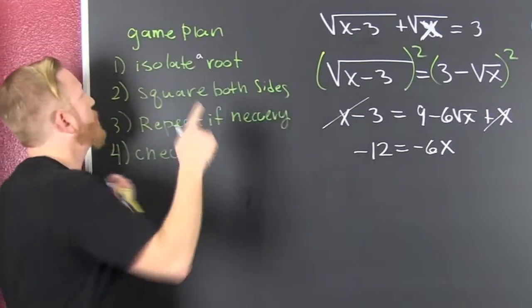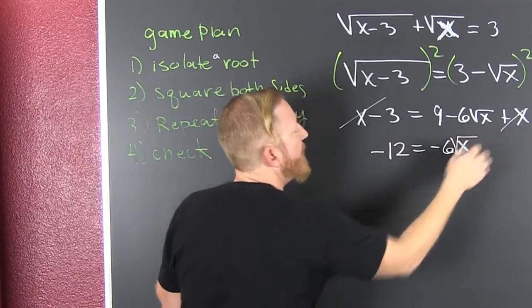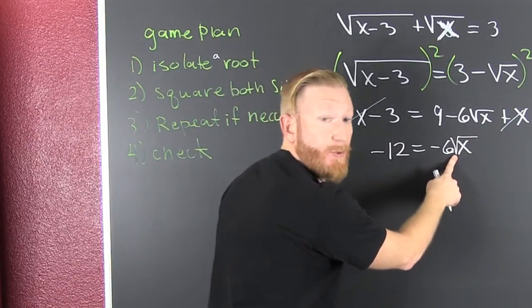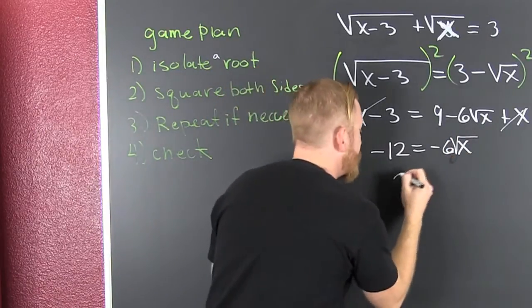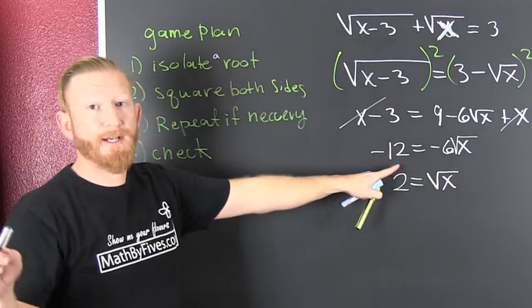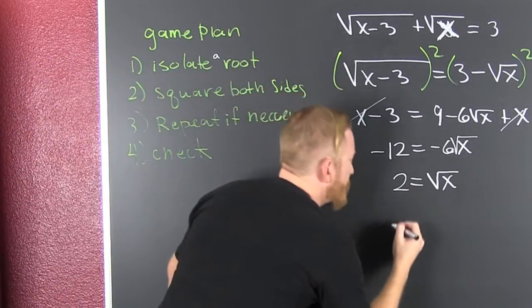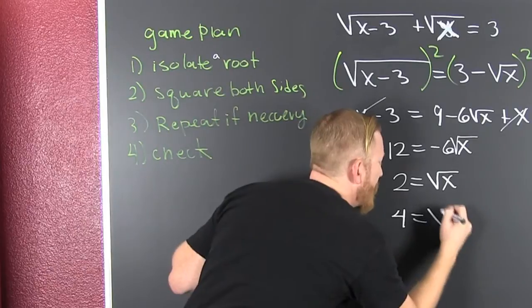We're repeating the steps. Isolate the root - it's not isolated there, so we need to divide both sides by -6. And before I say bye-bye to this problem, I've now repeated my steps where I square both sides. So I square both sides and I'm left with 4 is equal to x.